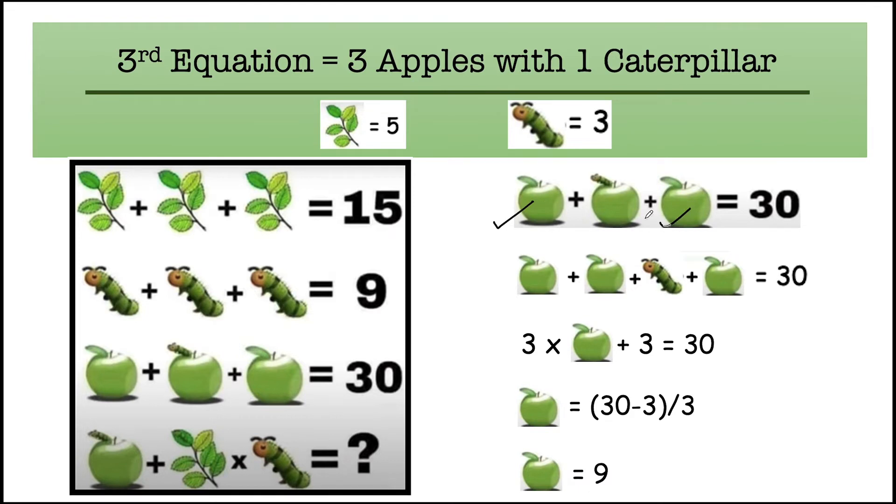Now jumping to the third equation, here you can see there are two apples, and on the middle apple there is one caterpillar present. So considering that, there will be three apples and one caterpillar. Their total value is equal to 30.